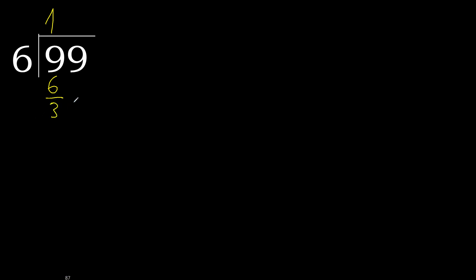Next, bring down to get 39. 6 multiplied by 7 is 42, which is greater. 6 multiplied by 6 is 36. Subtract — 39 minus 36 is 3. Next.